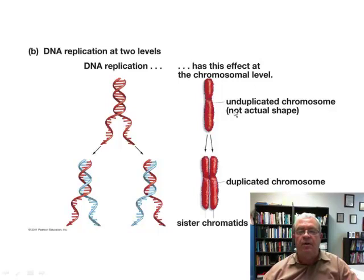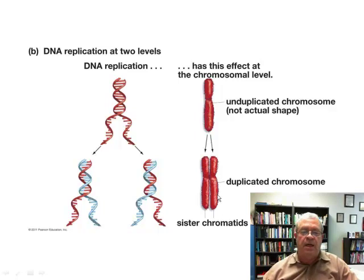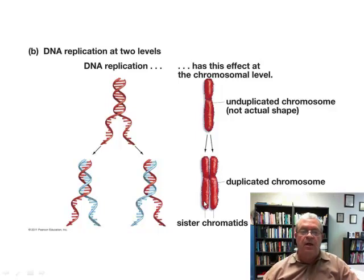Here we have an unduplicated chromosome, and here the chromosome has been duplicated. When a chromosome is duplicated, each half is identical — so each half is called a sister chromatid. These are twin sisters; this chromatid is identical to the one it's attached to.